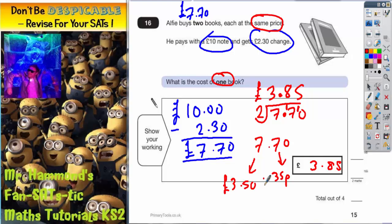...and then just add those two together. If you add those two together, you should get three pound eighty five, which is the same answer. So one book must have been three pound eighty five. Final answer.